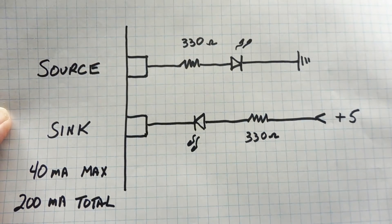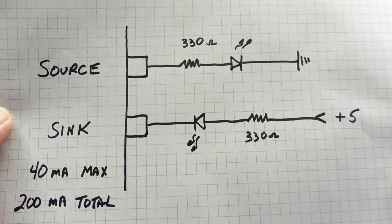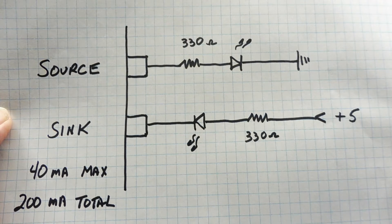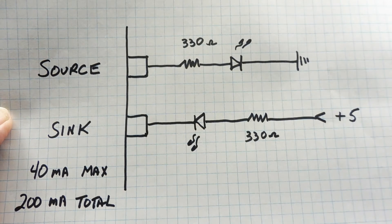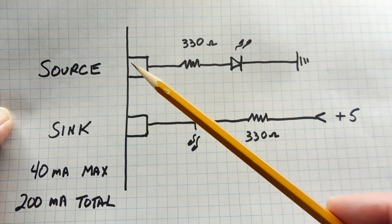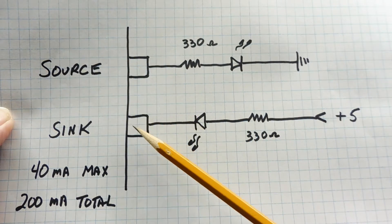Here's a diagram of two GPIO pins on the Atmega328P microcontroller. Both pins are configured as outputs, and the first pin you see here is sourcing current, and the second pin is sinking current.